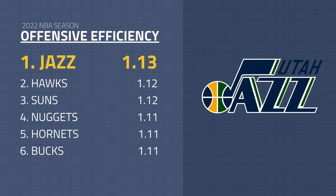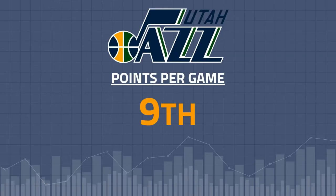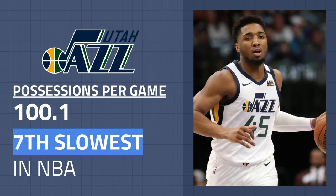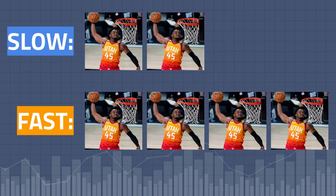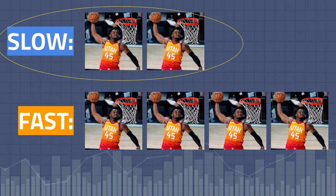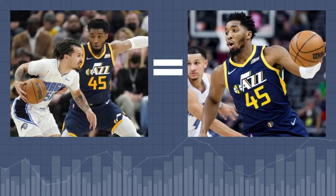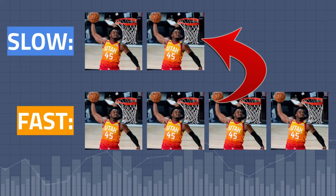Here's an example of why we should do this. In 2022, the Jazz led the NBA in offensive efficiency, or points per possession, but ranked 9th in the league in total points per game. Why is this? It's because the Jazz typically played with a slow pace, resulting in a low number of possessions. This low number of possessions gave the Jazz fewer opportunities to score, causing them to rank 9th in total points per game. Remember, both teams will have nearly the same amount of possessions at the end of every game — some games will have a low amount, others high — and the Jazz typically played in games with a low amount of possessions.